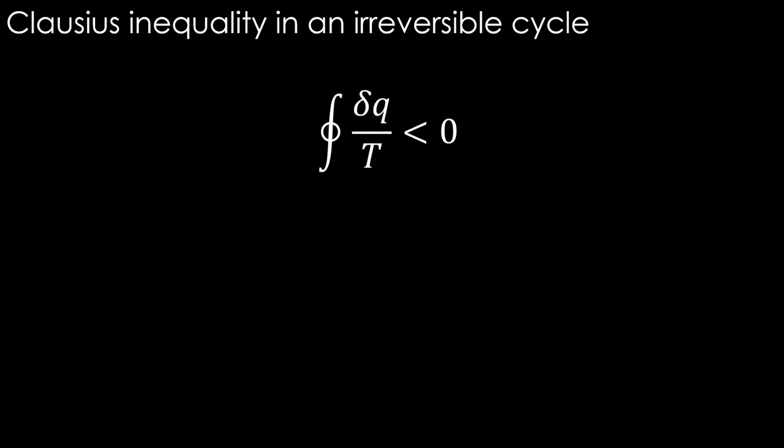The cyclic integral of δq/T is not zero in the irreversible case — it was zero in the reversible cycle, from which we concluded it represents a change in a state property, which we called entropy. In an irreversible process, this doesn't mean the state property is wrong, nor that the change in entropy is nonzero. It only means that the change in the state property is not equal to the integral of δq/T in the irreversible process.